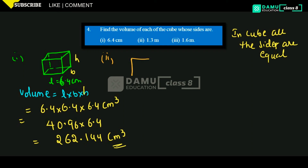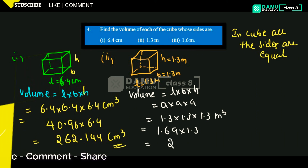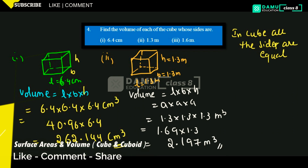Second one: 1.3 meters. Draw a cube for this also — it is better to draw cube shapes because you can easily work. Length will be 1.3, breadth will be 1.3, height will be 1.3 meters. Volume will be equal to length into breadth into height — that is side into side into side. 1.3 into 1.3 into 1.3. 1.69 into 1.3 will be 2.197 meter cube. This is the answer.